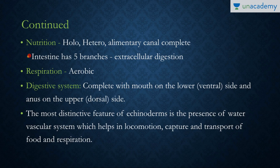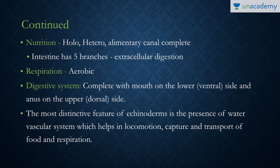For nutrition, they are holotrophic and heterotrophic, with a complete alimentary canal consisting of a mouth and an anus. The intestine has five branches, reflecting their pentamerous symmetry, and they have extracellular digestion. They have aerobic respiration. The digestive system is complete, with the mouth on the ventral side and the anus on the dorsal side.